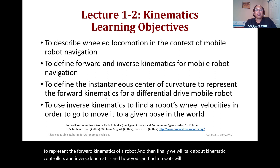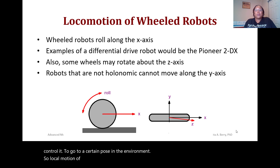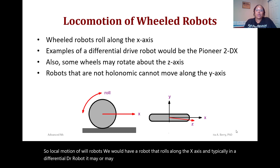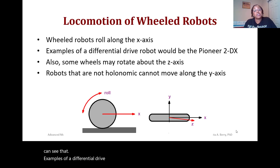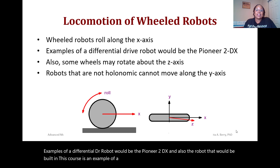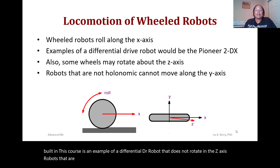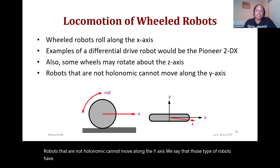For locomotion of wheeled robots, a robot rolls along the x-axis, and typically in a differential drive robot it may or may not also have rotation in the z-axis. Examples include the Pioneer 2DX and the robot built in this course. Robots that are not holonomic cannot move along the y-axis. Robots that have full control of their degrees of freedom are called omni-directional.